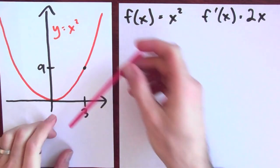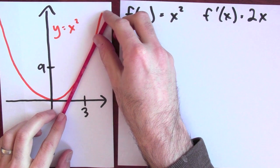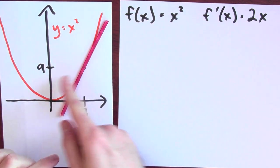Let's find the equation of the tangent line in a concrete example. Here's a graph of y equals x squared. Let's figure out the equation of the tangent line to that graph at the point (3, 9).